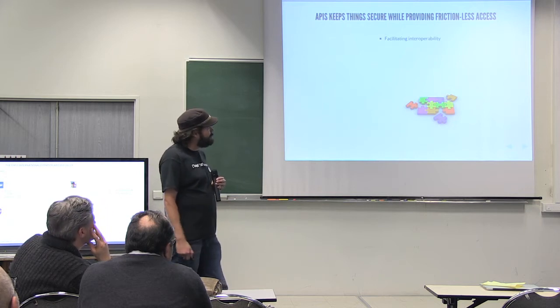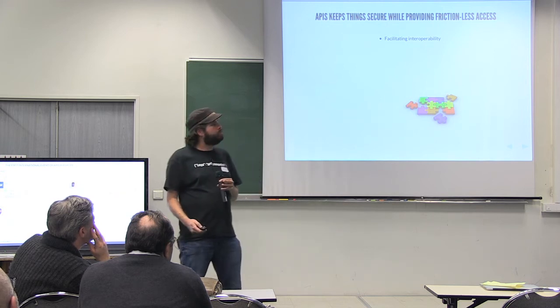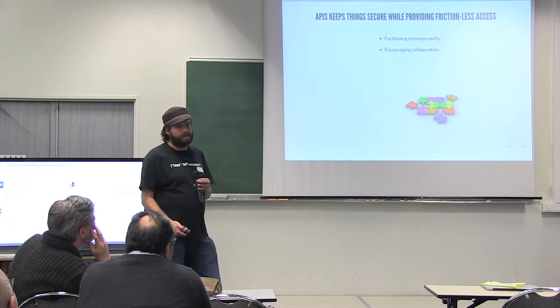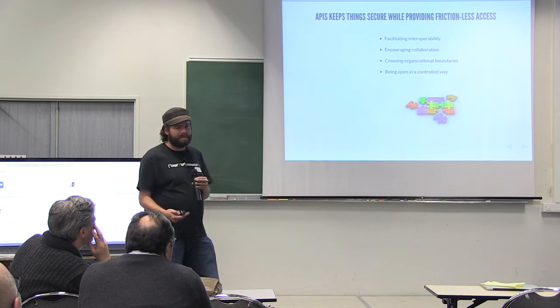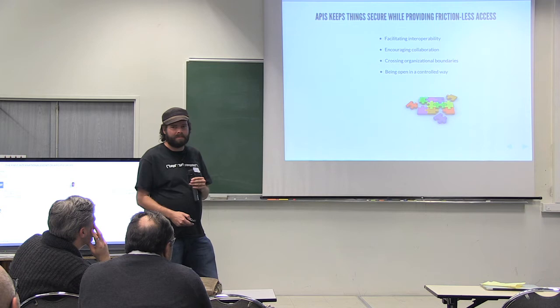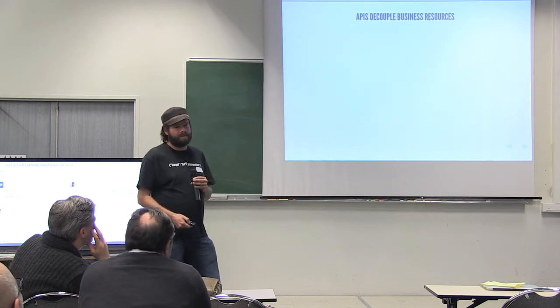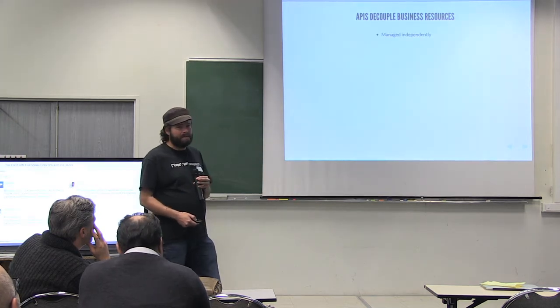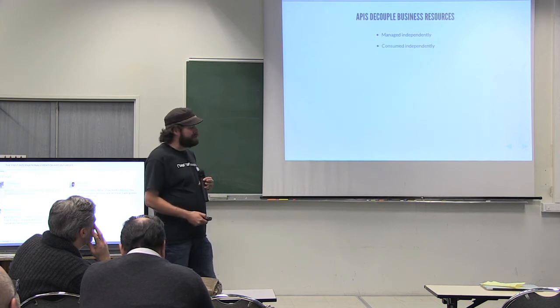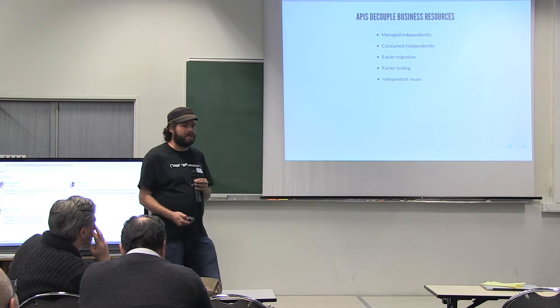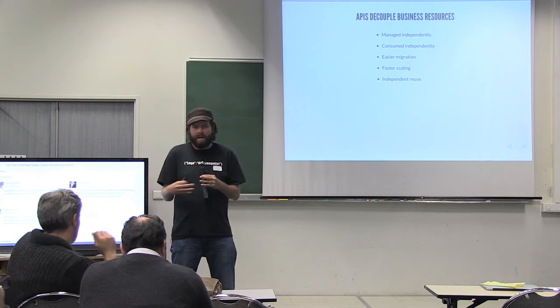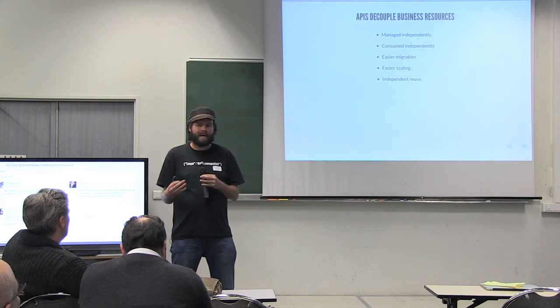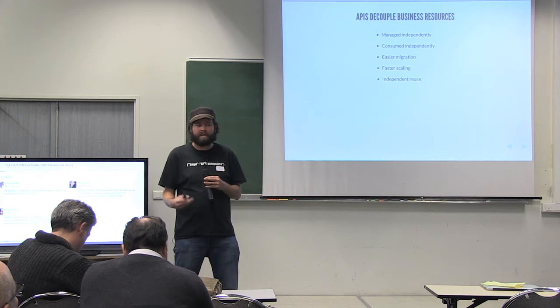So APIs keep things secure while allowing for frictionless access. They facilitate interoperability. They encourage collaboration. They cross organizational boundaries. They're about being open, but in a controlled way, which I know a lot of companies like. I'm open by default, but I know a lot of companies are much more cautious about it. APIs decouple resources. They allow them to be managed independently of each other and thought of independently. Consumed independently. And it allows for easier migration, faster scaling, and independent reuse. So when you're going through and defining content and data, they may have a lot of interconnectedness now in how they're currently being implemented. But APIs allow you to think of them independently. Break them up into smaller, bite-sized chunks. And hopefully allow you to reuse them and think differently about how you're going to sell these.